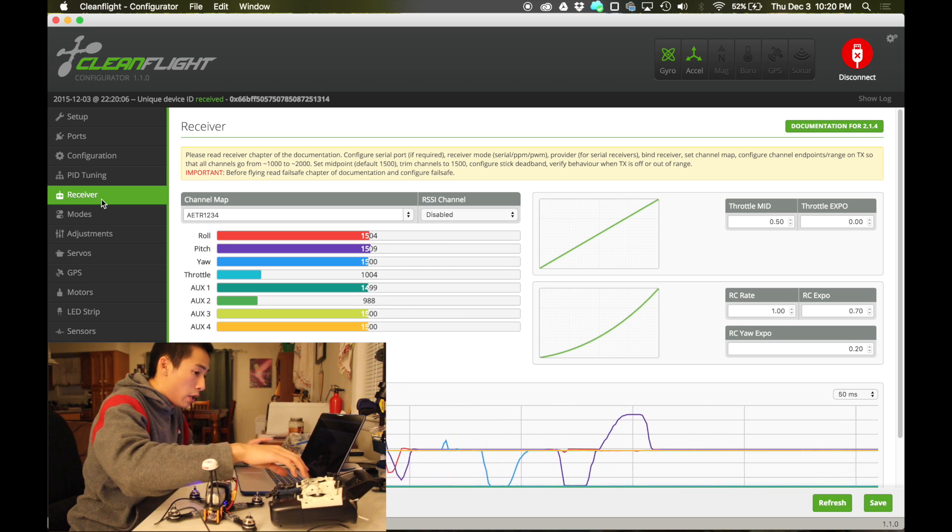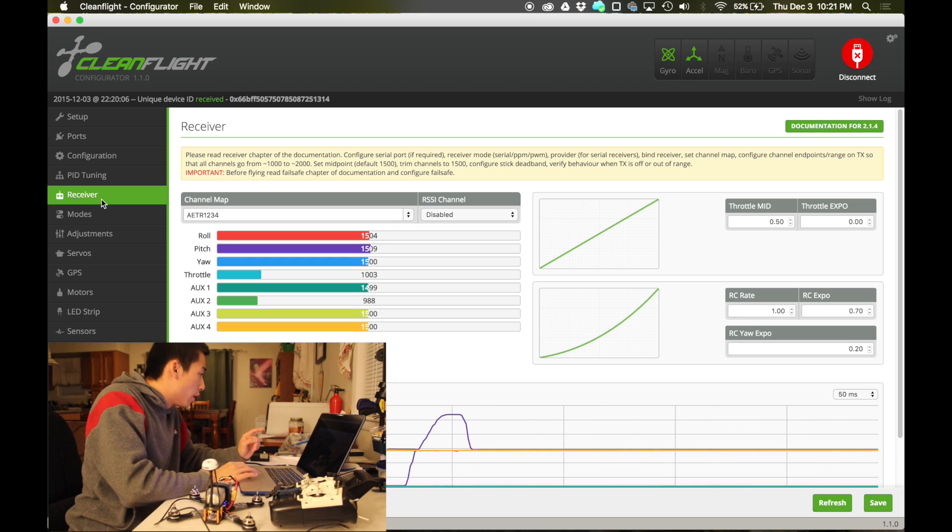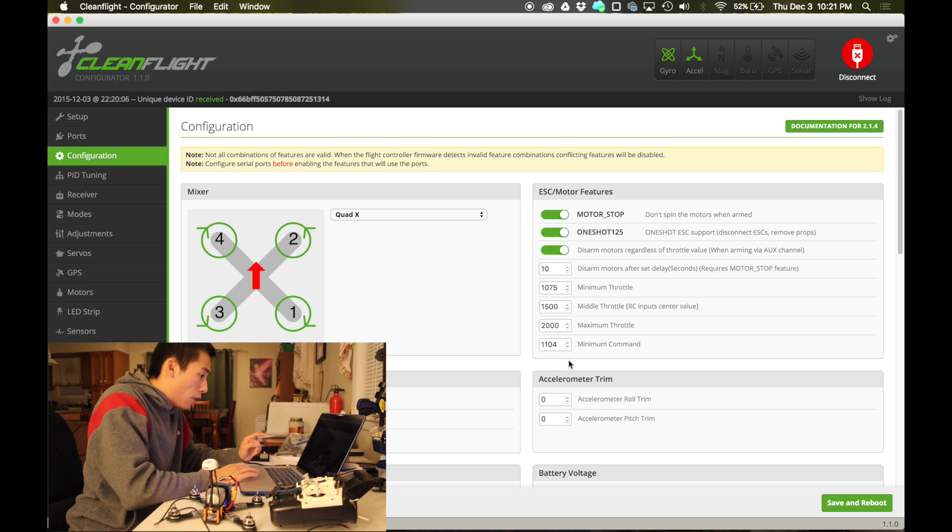So that is the number I'm going to use. The minimum throttle on my transmitter when it's active is going to be the minimum command that I put here. So minimum command is minimum throttle, and maximum throttle is obviously what the maximum throttle is. Save and reboot. I like to keep minimum throttle at 1075. This kicks in if you do not have motor stop engaged.